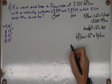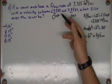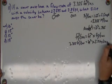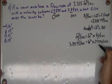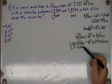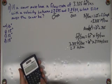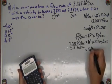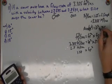So I plug in: 3.875 ft³/s = ft² × 2.8 ft/s. Solving for area, I divide both sides by 2.8 — the seconds cancel and I get square feet. 3.875 divided by 2.8 equals 1.38 ft². That's the cross-sectional area.